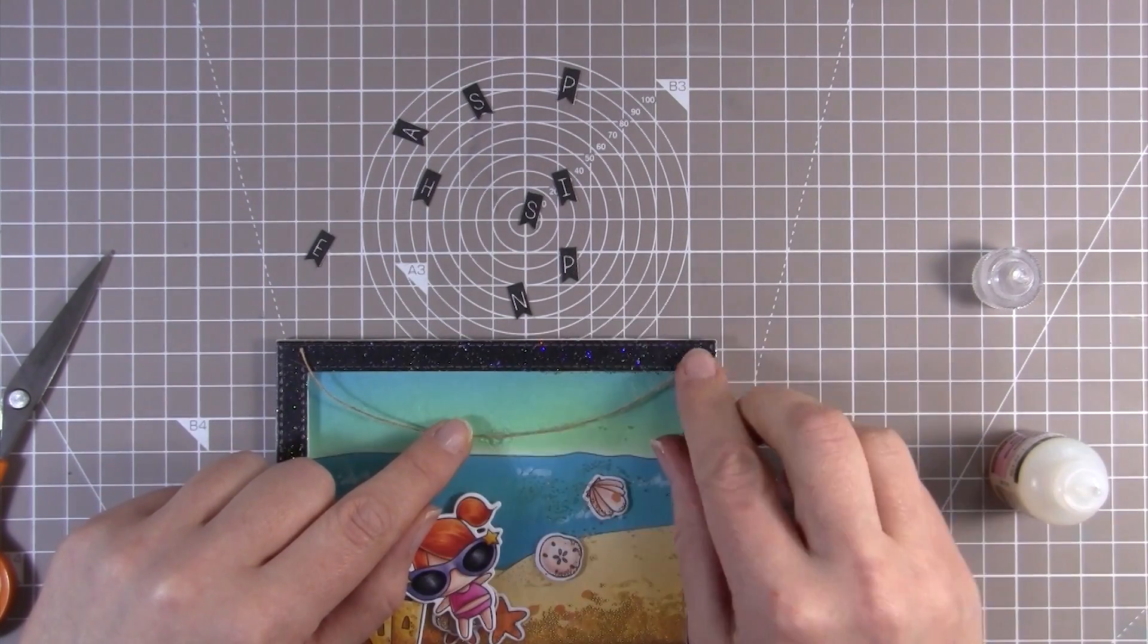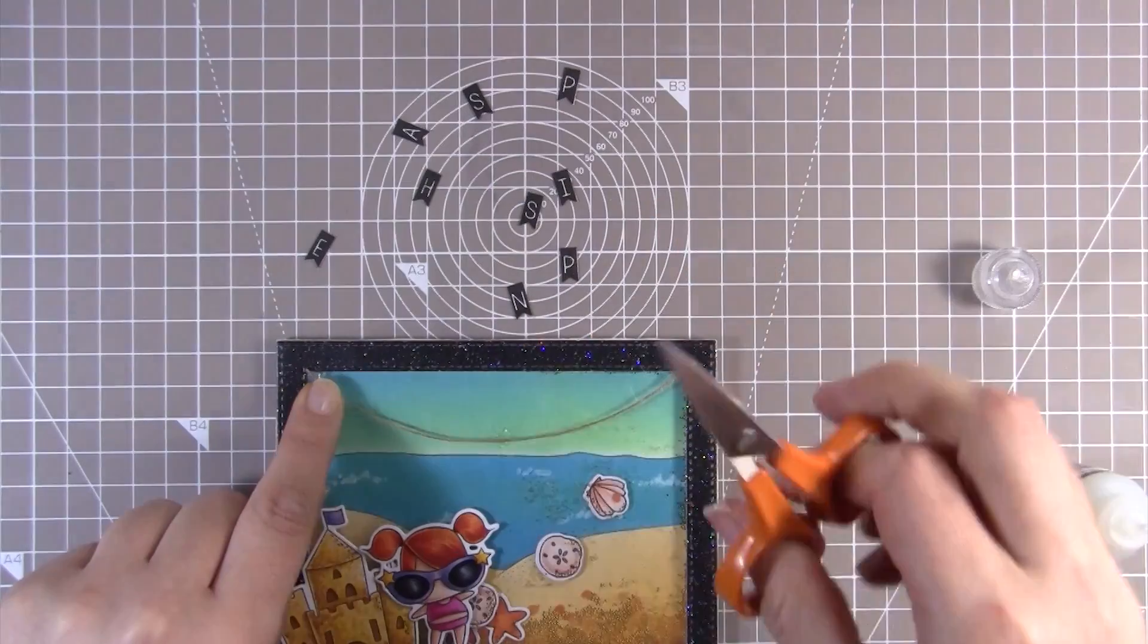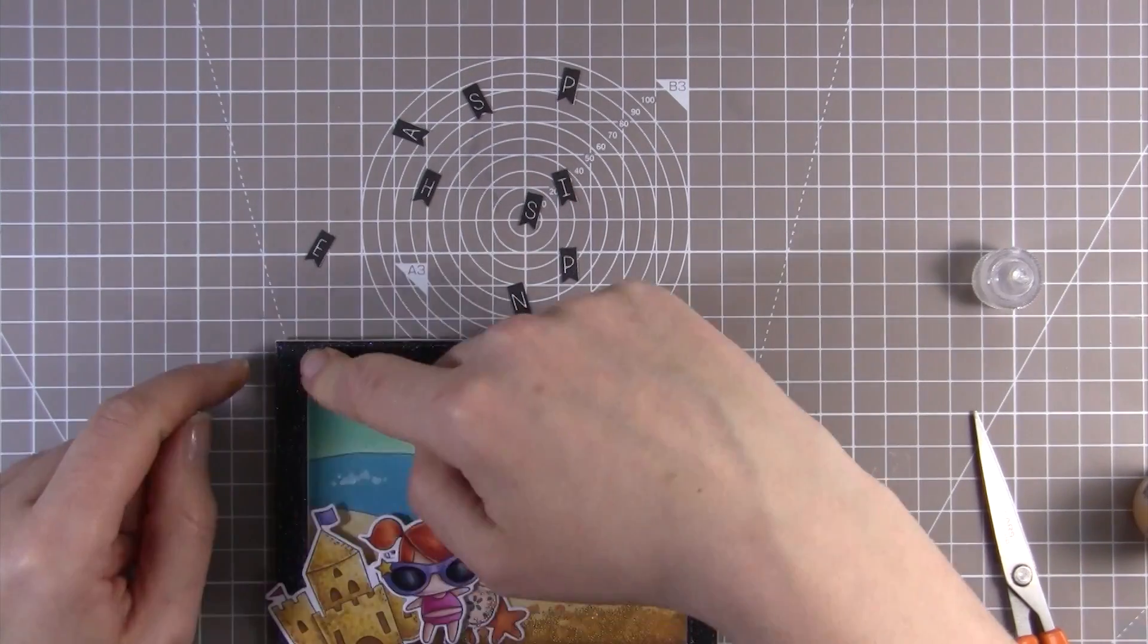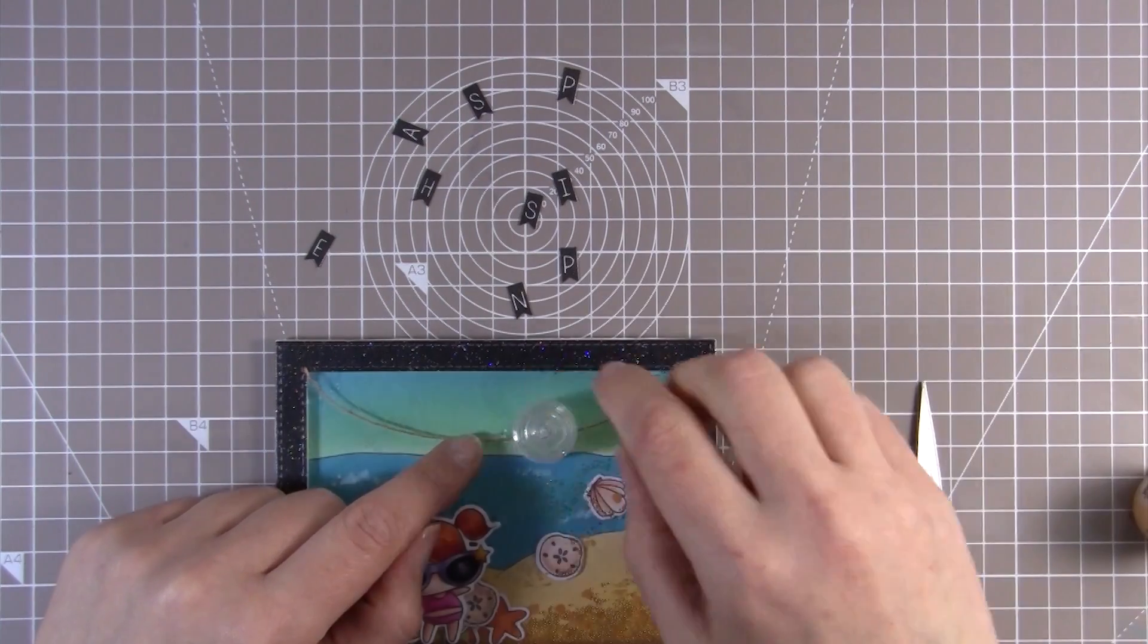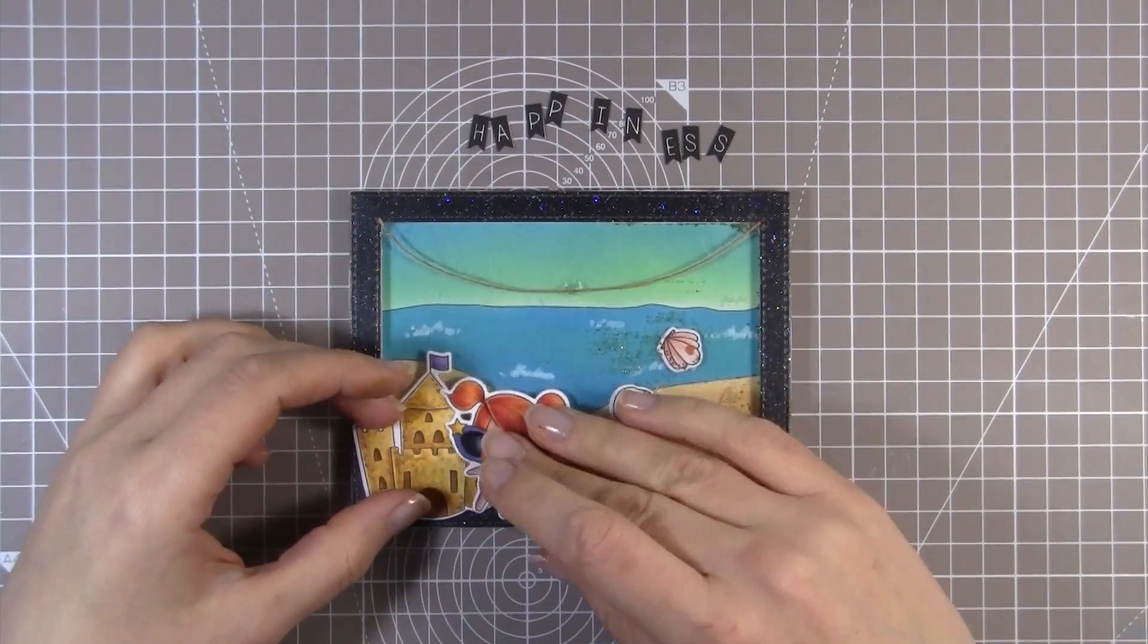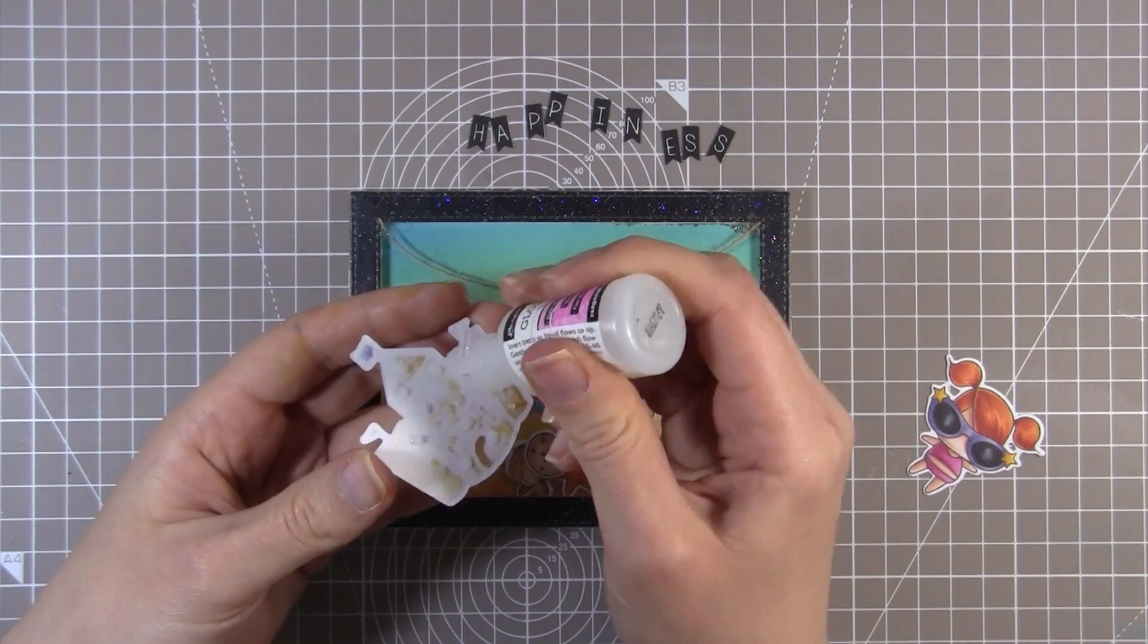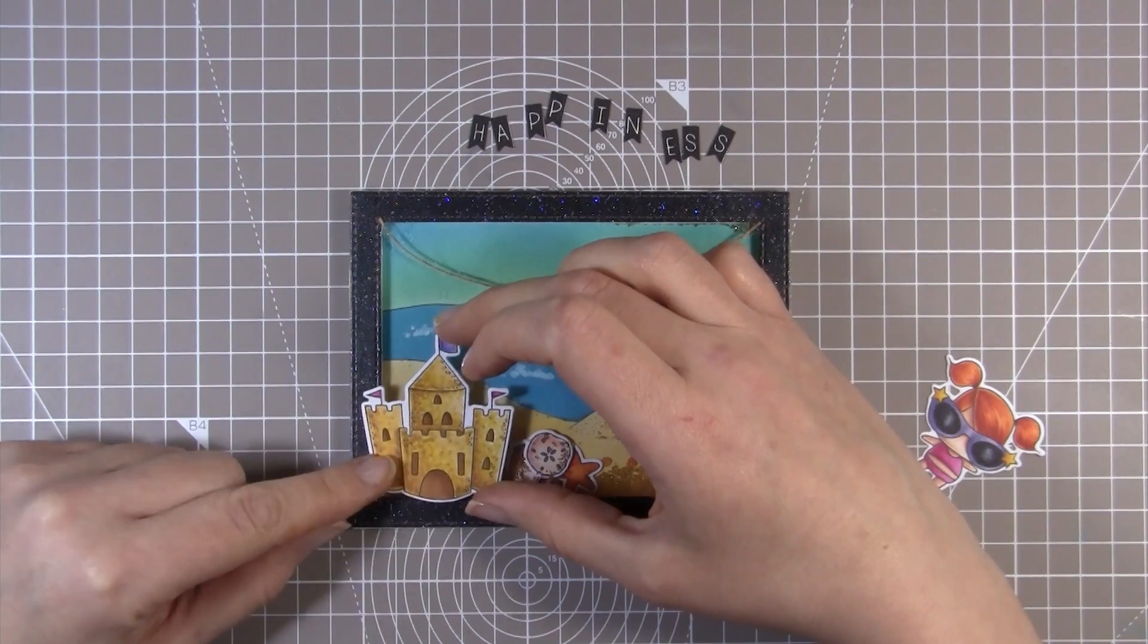When that was done I then added the sandcastle and the little girl. I used glossy accents to adhere the sandcastle just to make sure that it would stick nicely to the acetate. Then I used some clear foam pads that I've got in my stash to pop the little girl up so that she was standing nicely in front of the sandcastle. I did all this while I was waiting for that banner, that twine to dry nicely so that when I was adhering the letters it didn't start moving and coming apart.